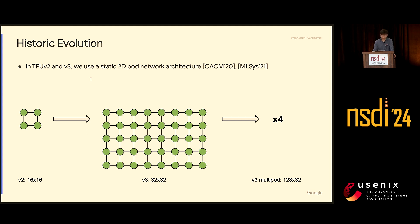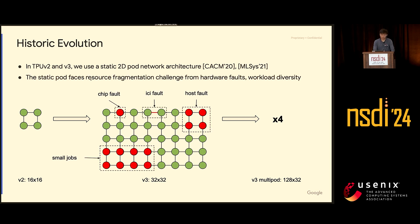These 2D torus models are static: we deploy one topology per supercomputer and it stays as-is. So these will have all kinds of problems: chip faults, host faults, small jobs taking up parts of the supercomputer, resource fragmentation everywhere. When we have larger business needs and want more chips used for training, sometimes the job will stay pending for a long time.